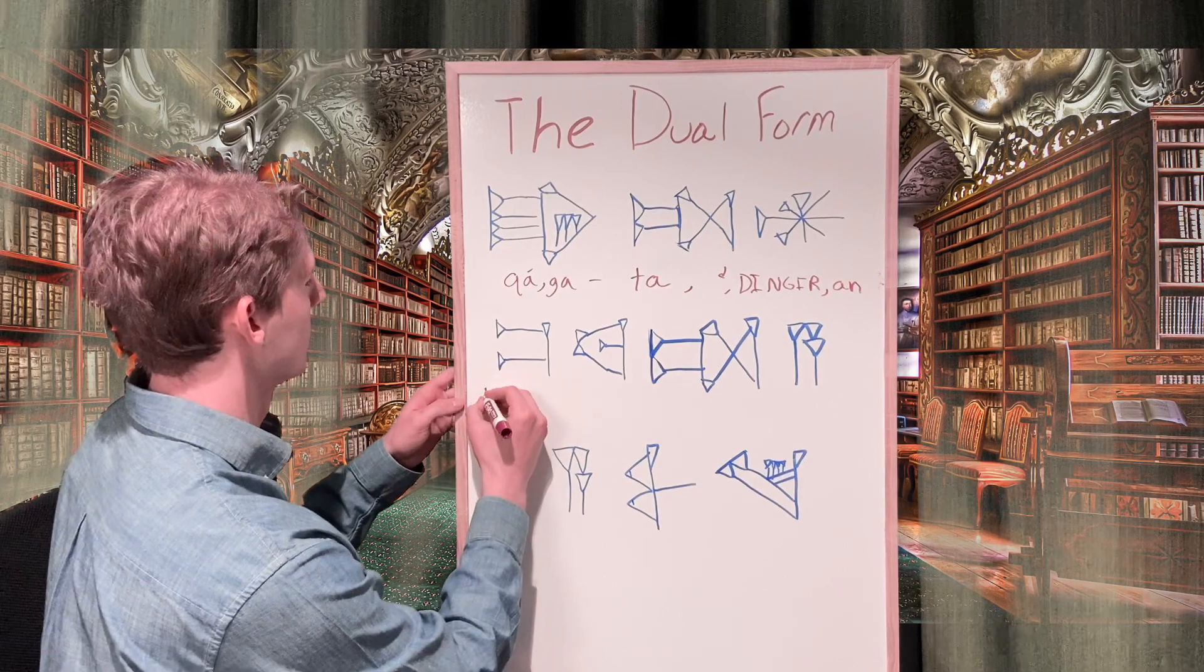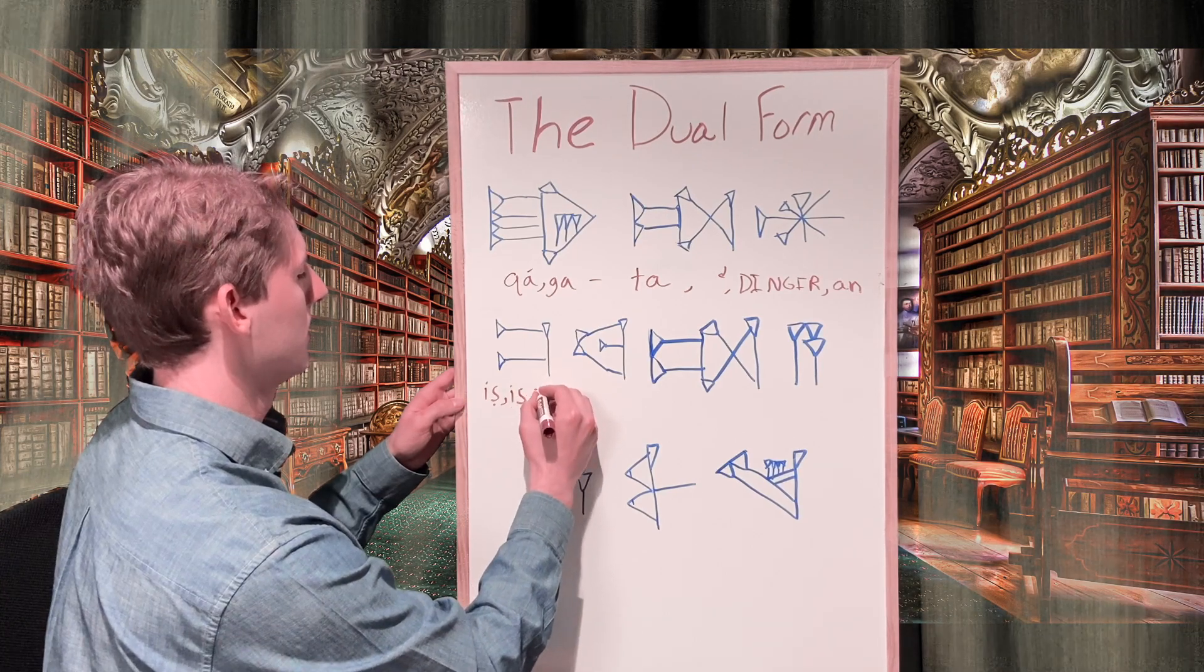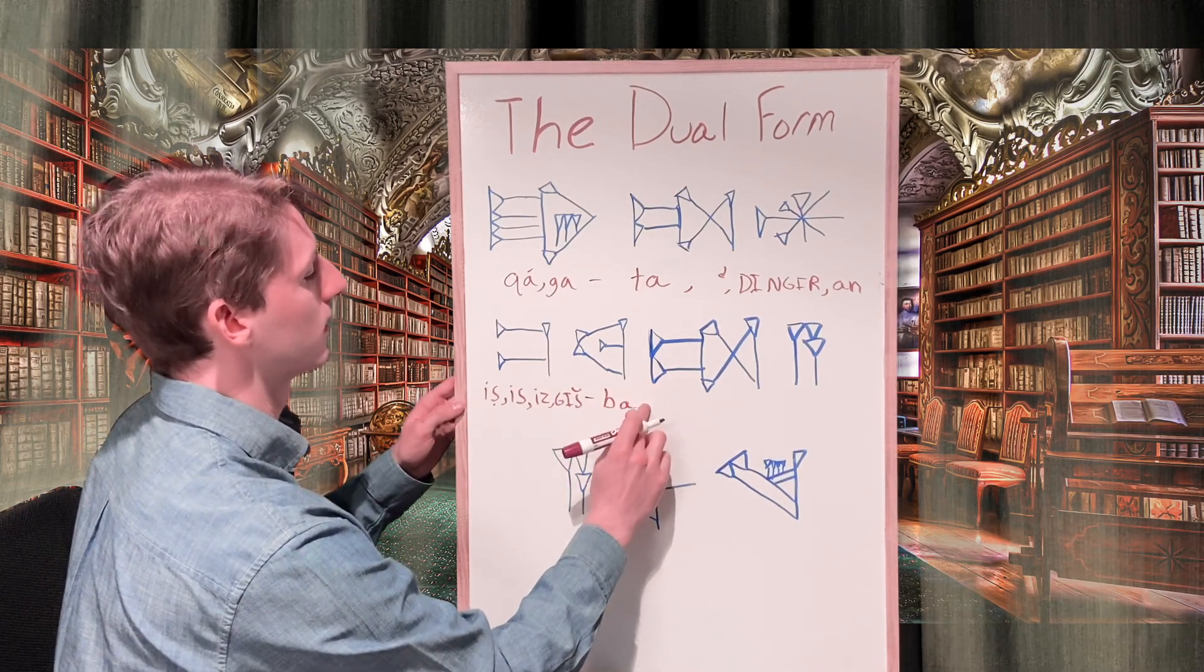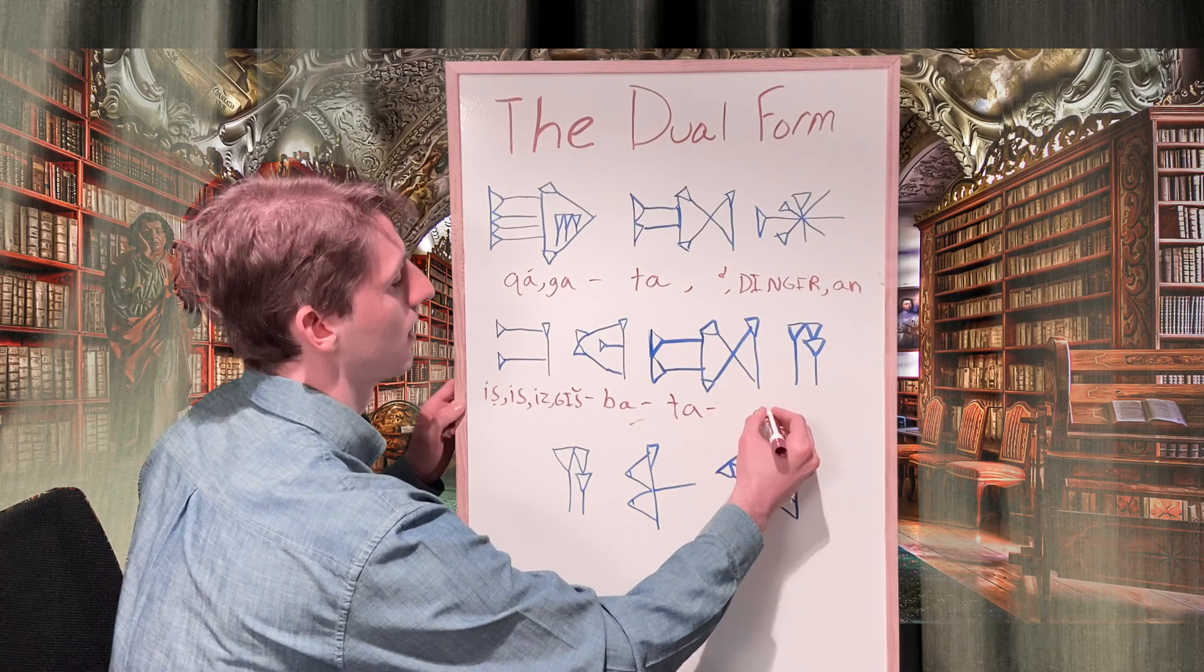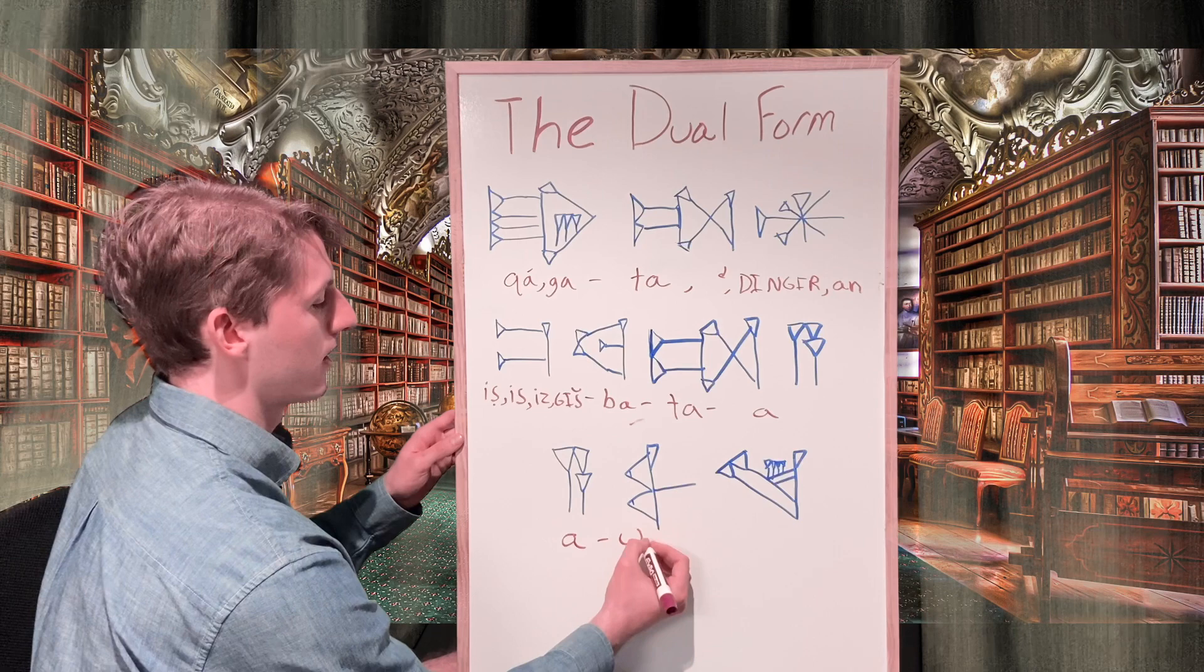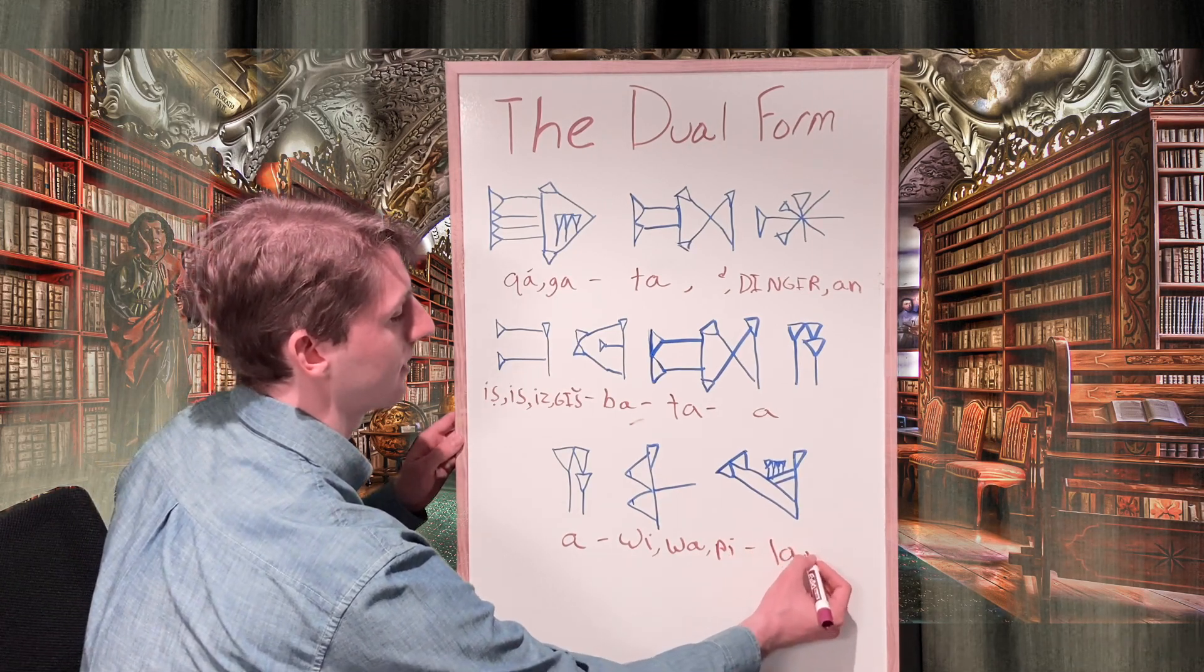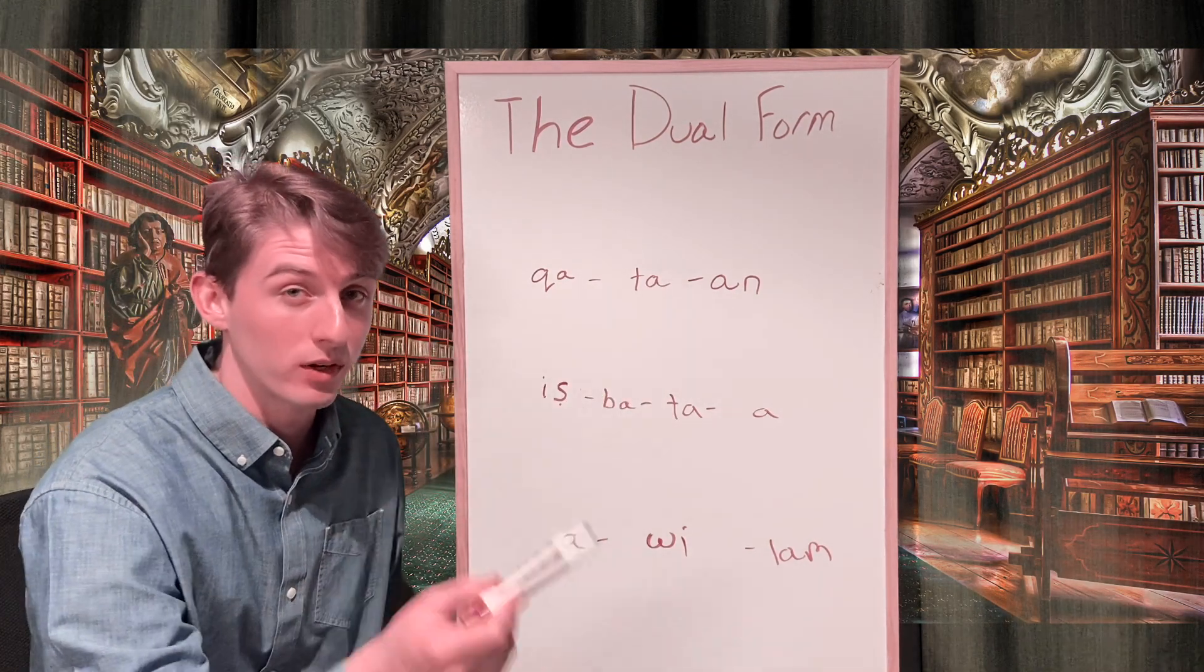The next line begins with the gish sign followed by the gish sign followed by the ba sign and again we've got the ta sign followed by the ah sign and another ah sign followed by wa pi followed by the lam sign. Here I have provided a transliteration with the values of each sign which we're going to use for our translation.